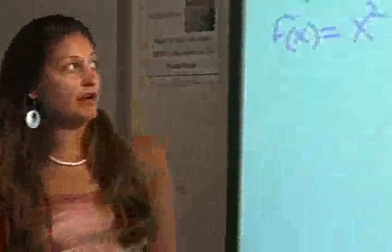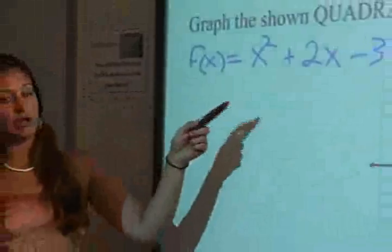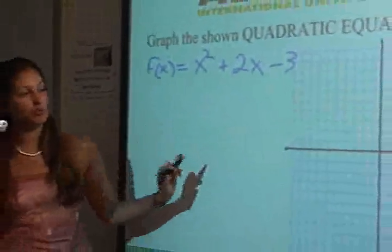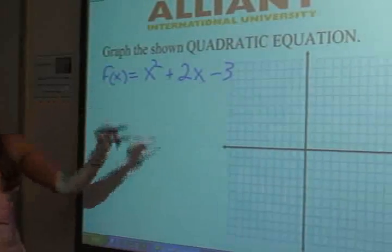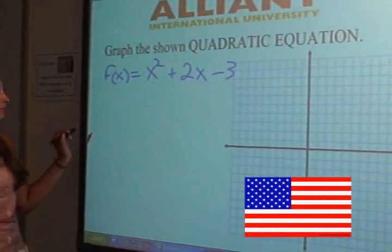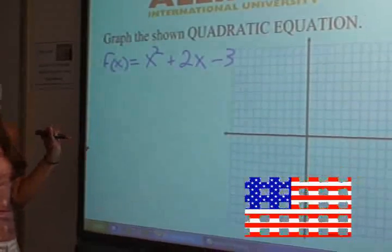Hey guys, today we are going to graph the shown quadratic equation. Let's start by finding two points on our x-axis. That's going to show us where the parabola is going to hit the x-axis. The x-intercepts is what we call this.